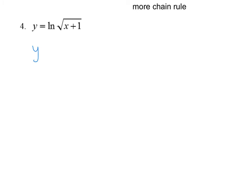Once again, if I rewrite this, we're going to use the chain rule again. So I have the natural log of x plus 1 to the 1 half power. I can use the chain rule on this. But I can also do something else.